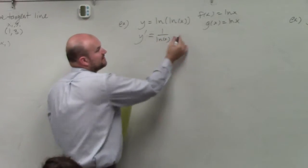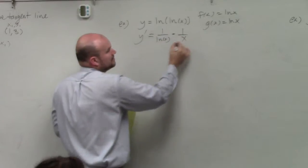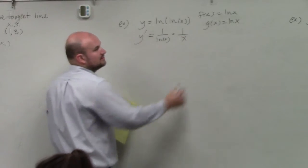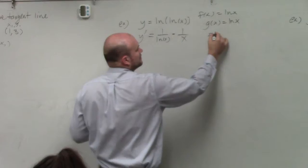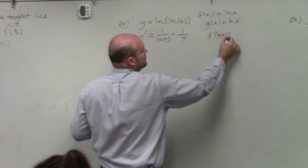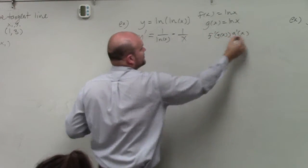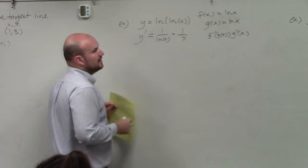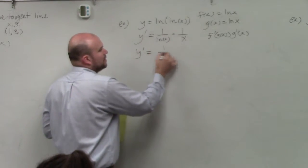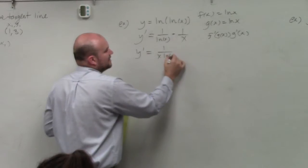my g of x, so it's 1 over ln of x, and then times the derivative of that, which is times g prime, which is 1 over x. If you guys remember, that's the way that I first showed it. So therefore, I can say y prime equals 1 over x ln of x.